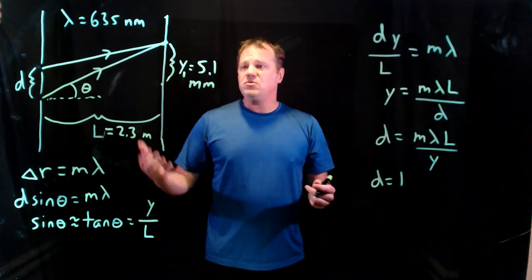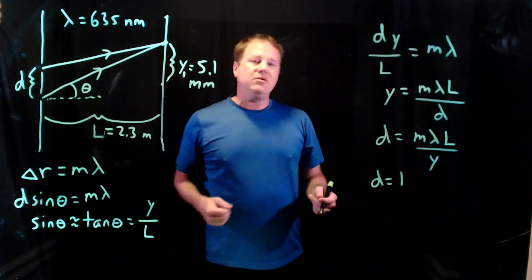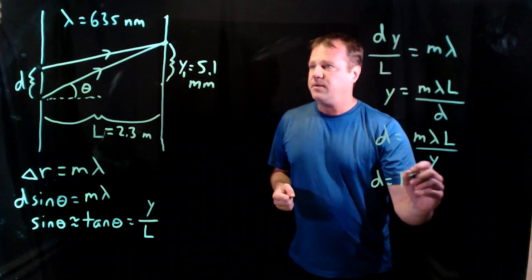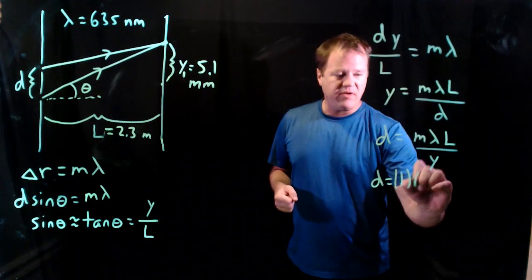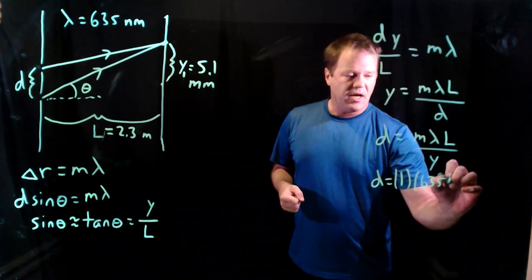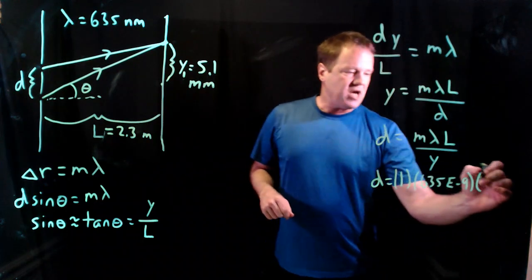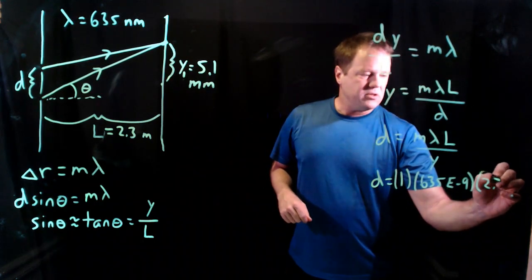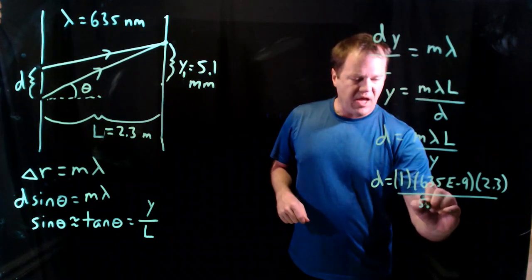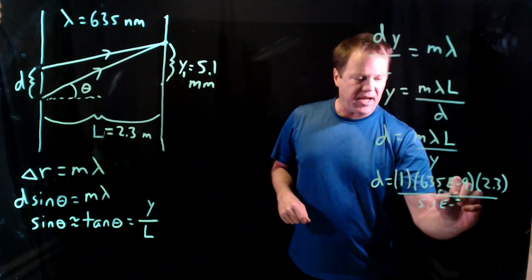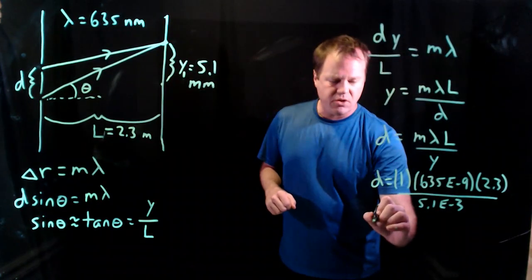So pretty easy here, just chuck numbers into the formula. You need to be careful about units. We've got y in millimeters, wavelength in nanometers, and length in meters, so let's be careful there. So m is 1, and then the wavelength in meters—let's convert everything to meters: 635 times 10 to the minus 9, macroscopic distance from the apertures to the screen of 2.3 meters, and then 5.1 times 10 to the minus 3 meters for the location of the bright spot.